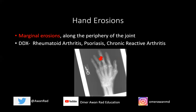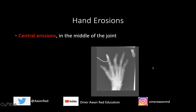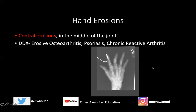The last type of erosion is a central erosion. For example, here at the fifth PIP joint, you have loss of bone in the center — the middle — of the joint. The differential for this would be erosive OA, psoriasis, and chronic reactive arthritis. Erosive OA is the prototypical type, giving the seagull appearance where you have osteophytes along the edges and a central area of lucency or loss of bone. But psoriasis and chronic reactive arthritis can also have central erosions.